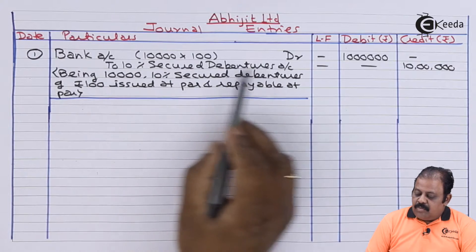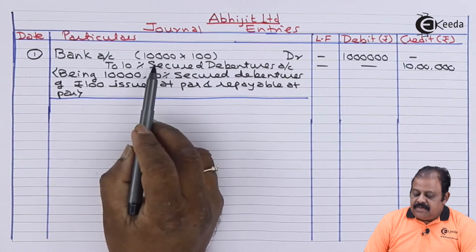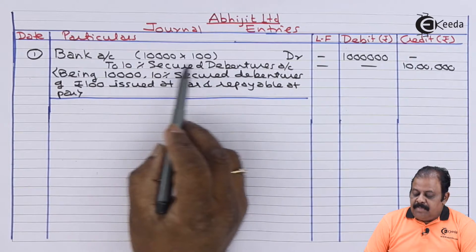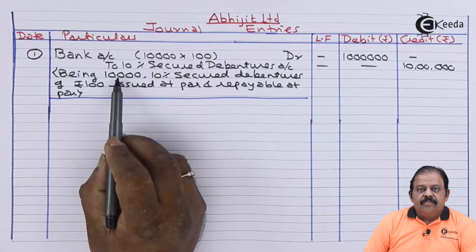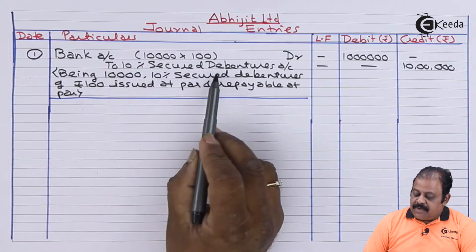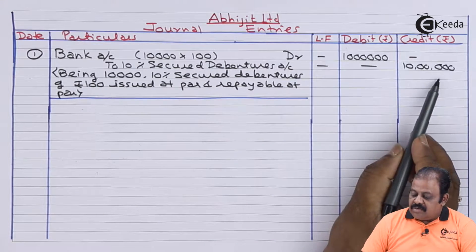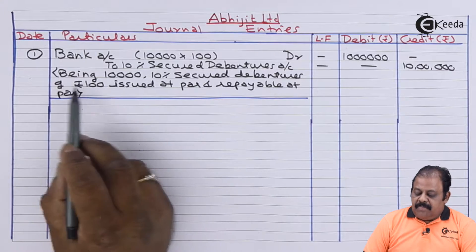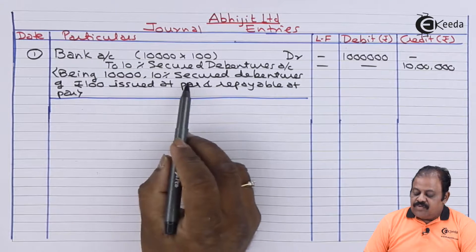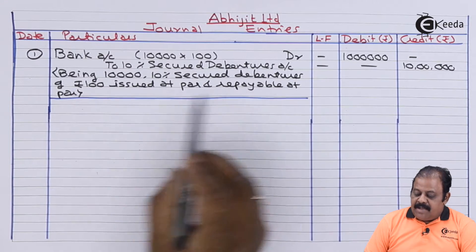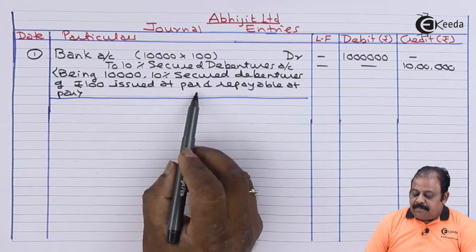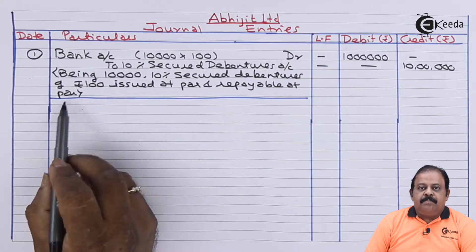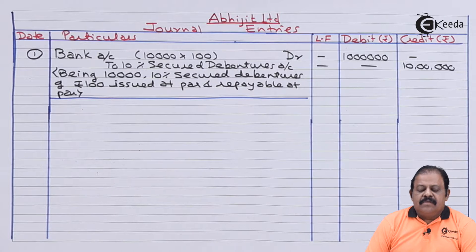Bank account debit 10 lakhs, to 10% secured debenture account 10 lakhs, being 10,000 10% secured debentures of Rs. 100 each issued at par and repayable at par. This is a journal entry.